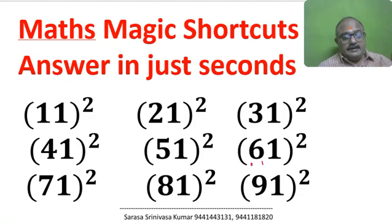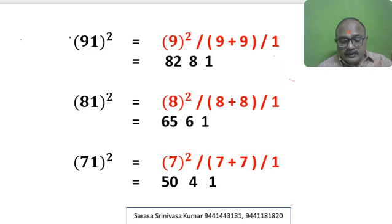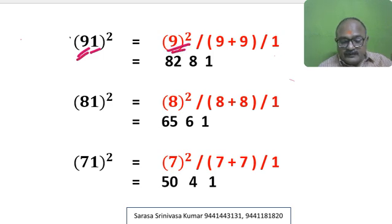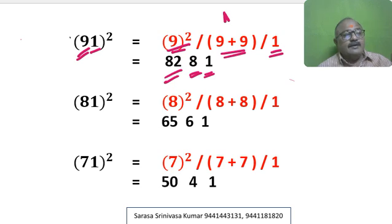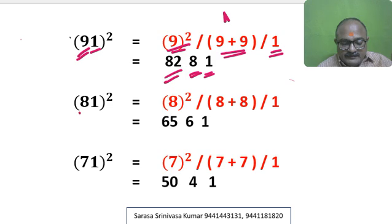91 square: 9 is in the 10th place, so write 9 square, 9 plus 9, and 1. So this is 1; 9 plus 9 is 18, write 1 8. 9 square is 81; 81 plus carry forward 1 is 82. So 91 square is 8281.